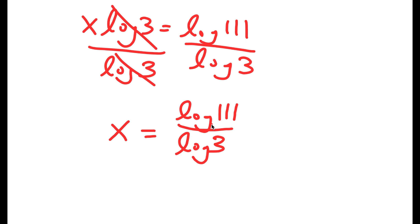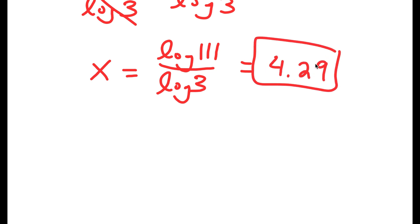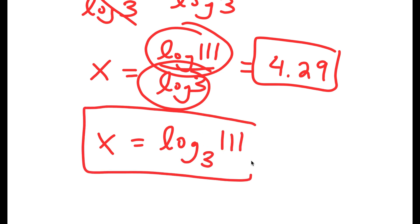I can write my solution in two ways. The first is to actually divide log 111 by log 3, which equals approximately 4.29. Another way is using the change of base identity: if I have something in the form log a over log b, this equals log base b of a. So x can also be written as log base 3 of 111.